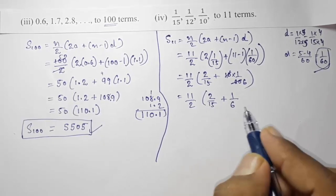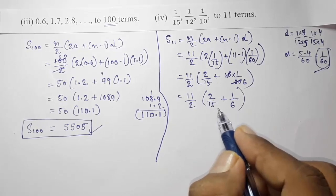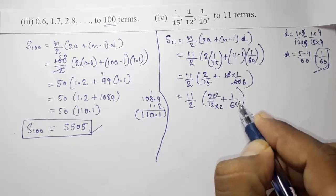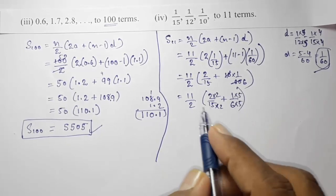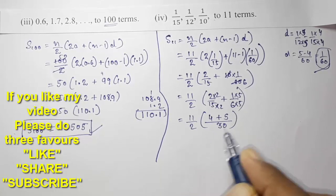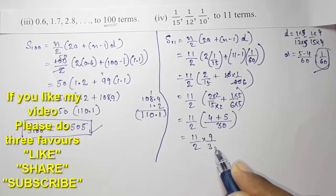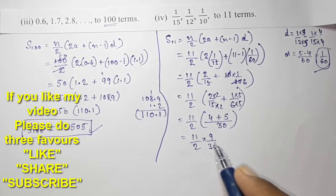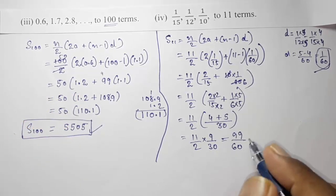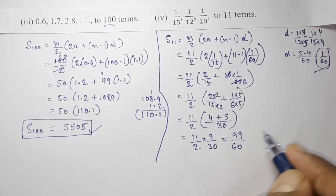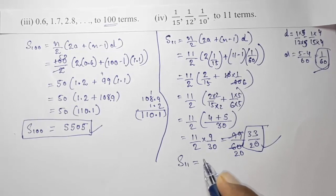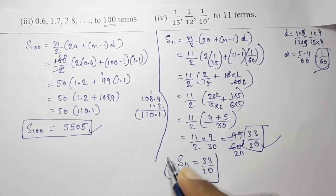To add 2/15 + 1/6, find LCM of 15 and 6, which is 30. So 2/15 = 4/30 and 1/6 = 5/30, giving 9/30. Then S11 = 11/2 × 9/30 = 99/60. Cancelling by 3: 99/60 = 33/20. The sum of 11 terms is 33/20.